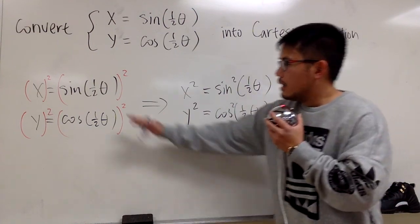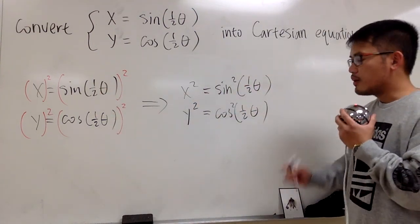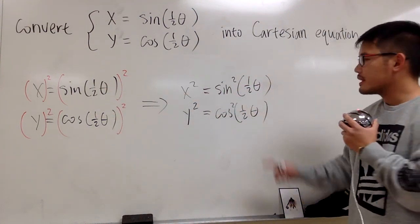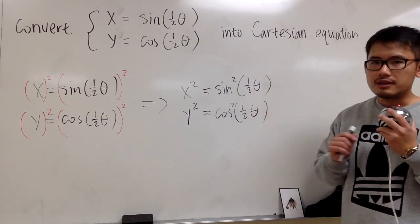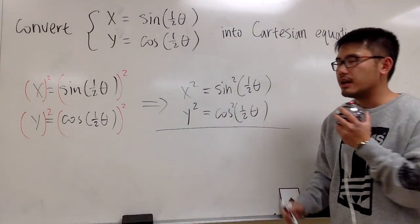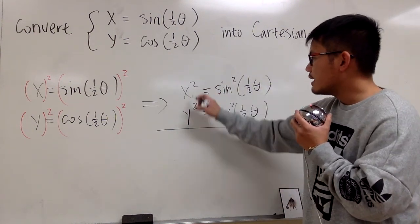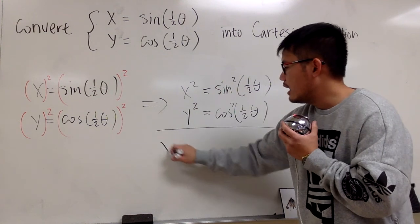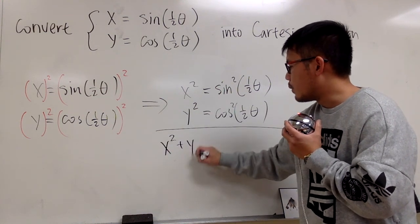So this is what we have now, and the good thing is that the angles inside are the same for this one and that one. I'm going to add these two equations together. And you will see, when we do that, we have on the left-hand side x squared plus y squared.